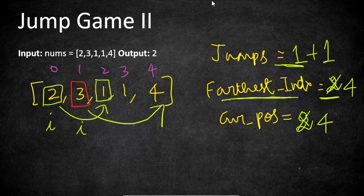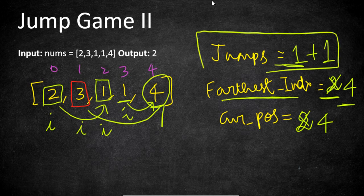Our iteration moves to index 2, where you can make only 1 jump reaching index 3. But the farthest index is already 4, so reaching 3 is not an improvement and no variables are updated. At index 3 the farthest jump is 1, reaching position 4, but we already have that recorded. We do not consider the value at the last position since we only need to reach it. Our iteration completes with 2 jumps, and that is our output.